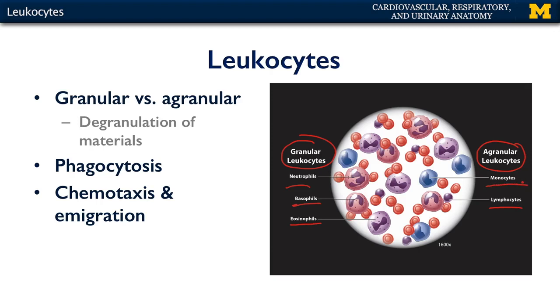Most leukocytes, but not all leukocytes, are capable of phagocytosis. Phagocytosis is the process of a cell eating something else. More often than not, these white blood cells are capable of eating pathogens, or even defunct and malfunctioning cells and pieces of cellular machinery.